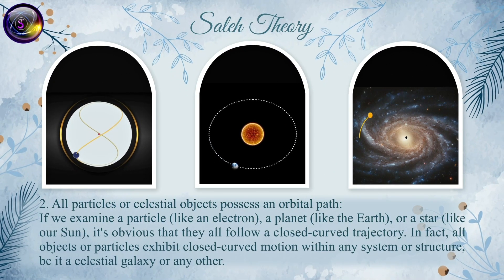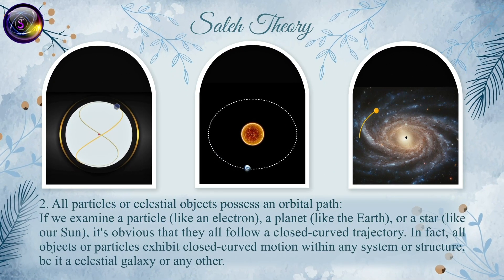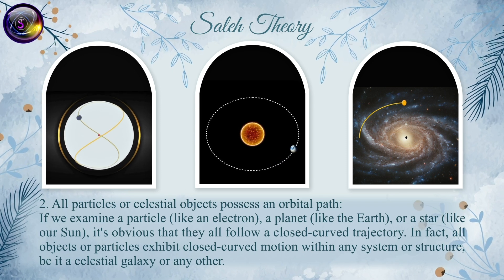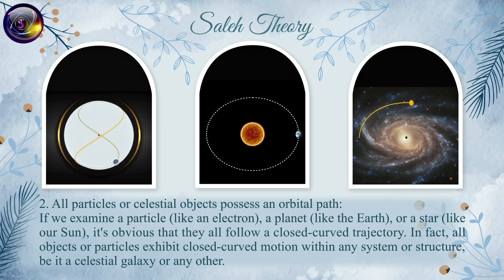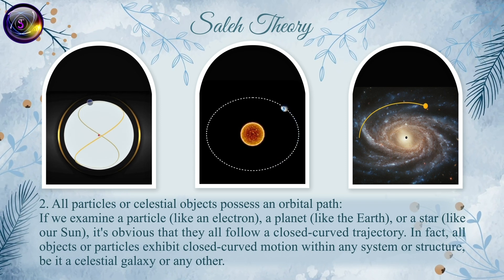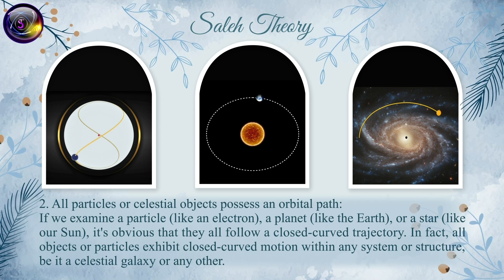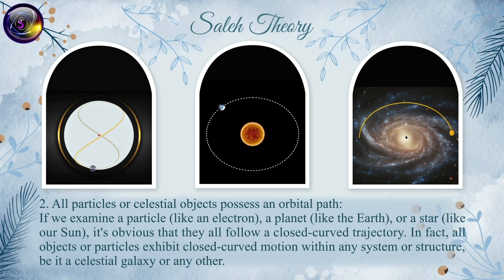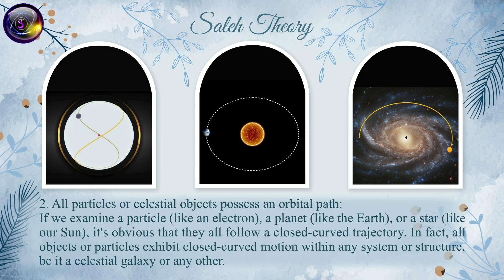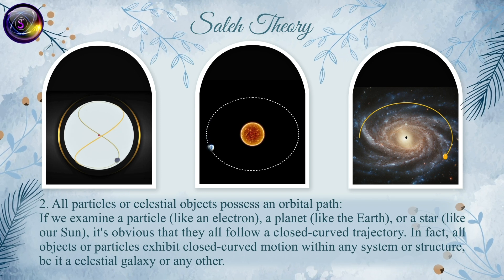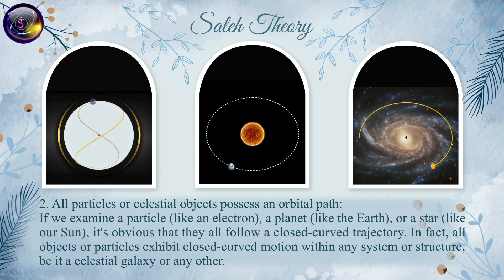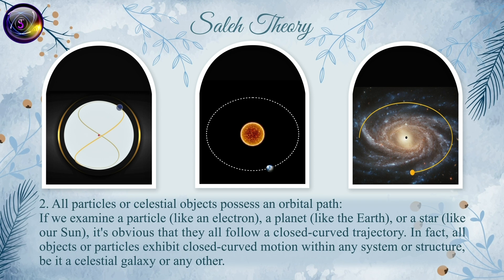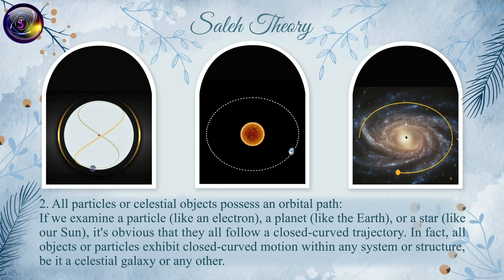Principle 2: All particles or celestial objects possess an orbital path. If we examine a particle like an electron, a planet like the Earth, or a star like our Sun, it is obvious that they all follow a closed-curve trajectory. In fact, all objects or particles exhibit closed-curve motion within any system or structure, be it a celestial galaxy or any other.